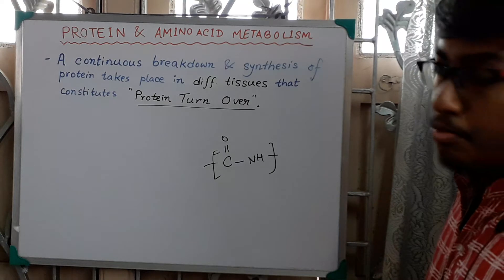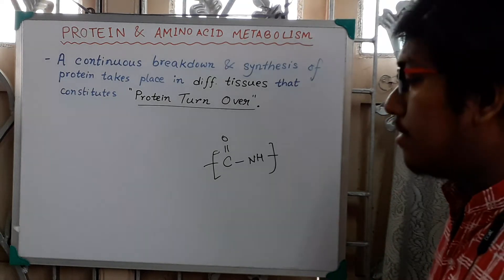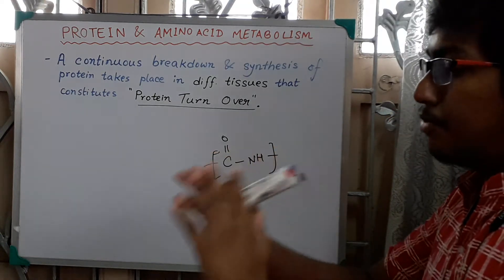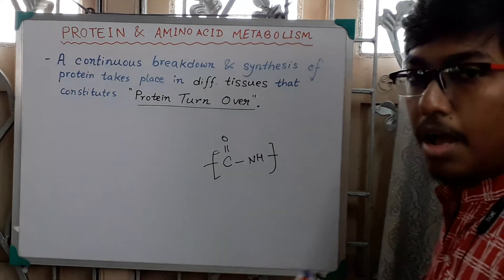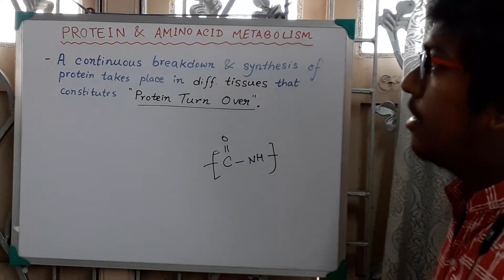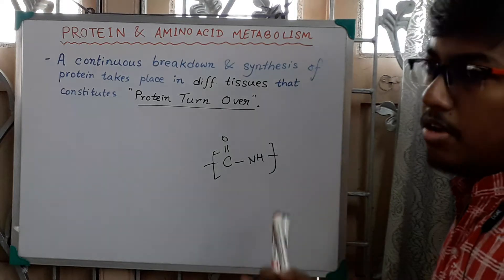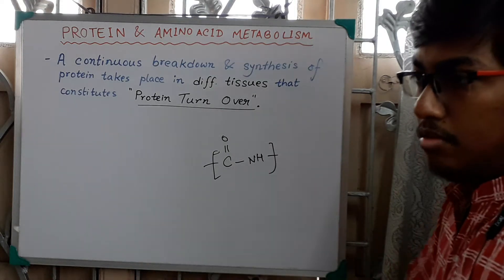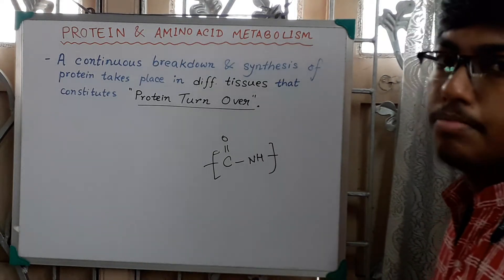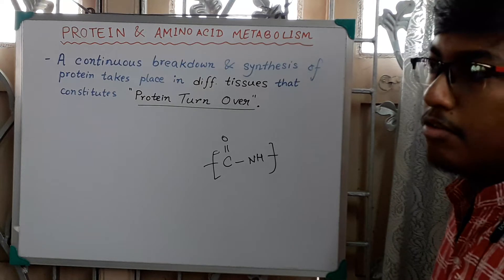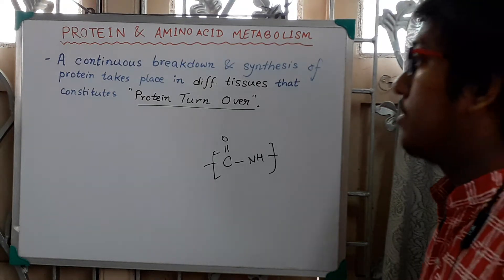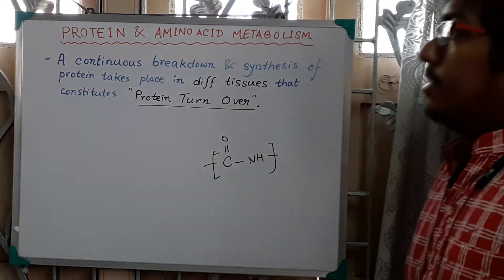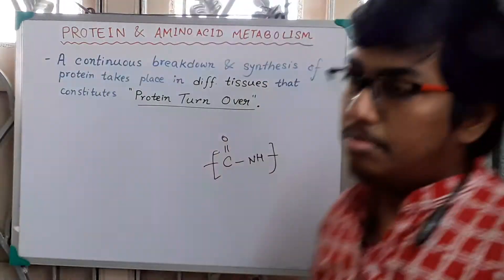What is protein catabolism or protein metabolism? Protein metabolism means the protein will be degraded or catabolized down to amino acids — this is protein metabolism or protein catabolism. And amino acid metabolism means the amino acid will be converted to different other compounds by catabolism. This is amino acid catabolism or metabolism.